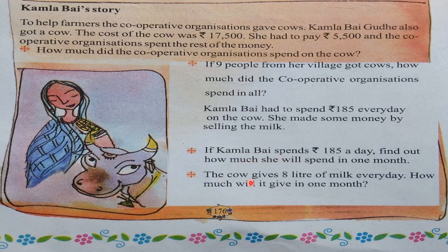The cow gives 8 liters of milk every day. How much milk will it give in 1 month? We have to find that out: 8 × 30 = 240 liters of milk the cow will give in 1 month. By reading the word problem, we will come to know what type of operations we have to do — whether addition, subtraction, or multiplication, and which two numbers to multiply.